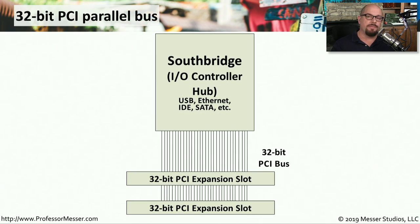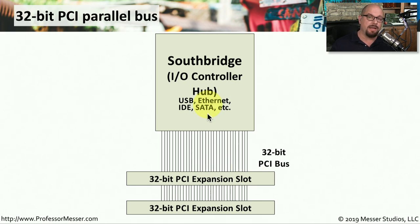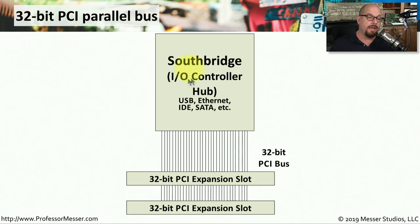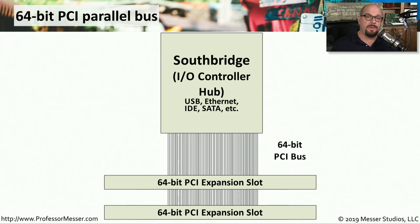Here's a block diagram of the 32-bit PCI parallel bus interface. This parallel bus means that we're sending all 32 bits at the same time across this bus from one side to the other. The expansion slots are connected to the bus on one end, and usually on the other end is what we call the south bridge, or the input-output controller hub. A 64-bit PCI bus looks very similar, but with a much wider bus sending those 64 bits simultaneously.